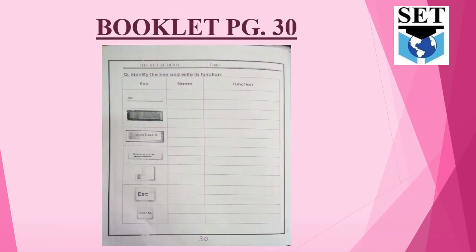Page number 30 - after mentioning the date, Question: 'Identify the key and write its function.' Some keys are given; write the correct name of those keys. For example, the first key is the Space Bar key - its function is 'Space between two words.' In the same way, write the correct name of the remaining keys along with their function.